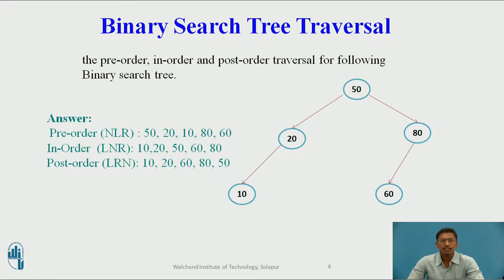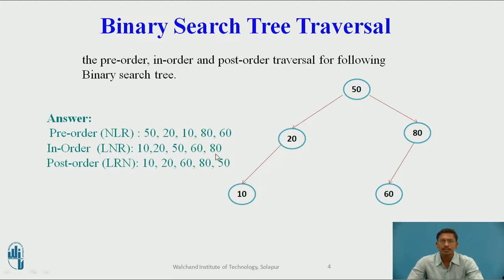There are three binary search tree traversal techniques: pre-order, in-order, and post-order traversal. In pre-order traversal, we visit the root or node first, then traverse the left subtree in pre-order, and then traverse the right subtree in pre-order.